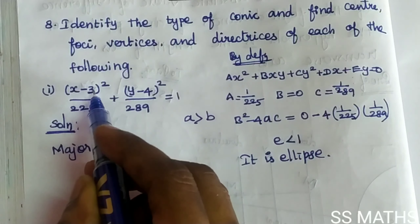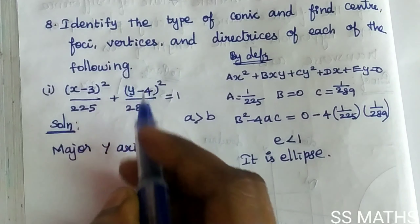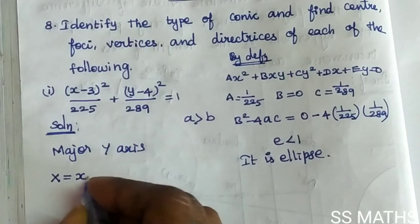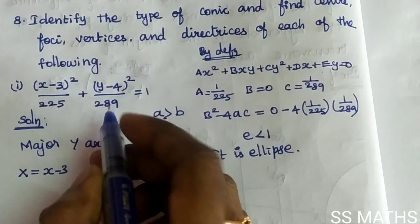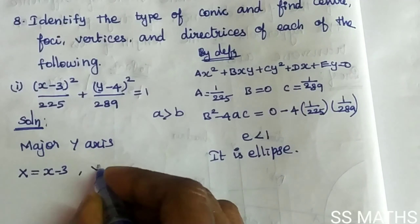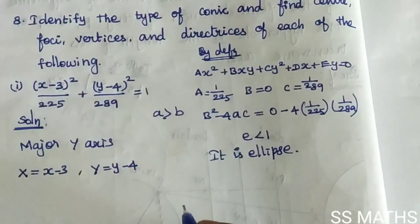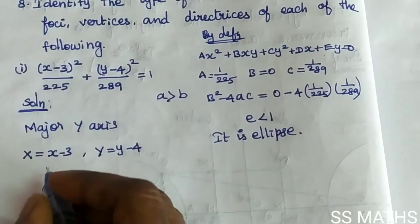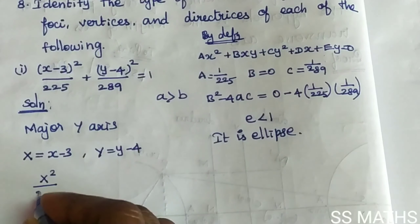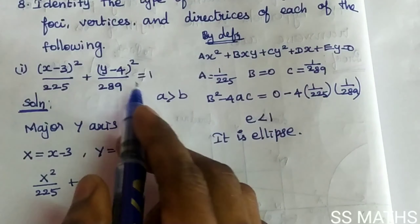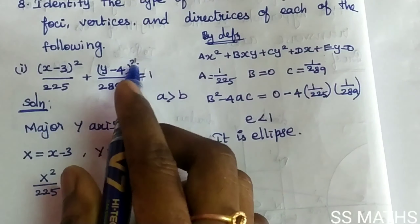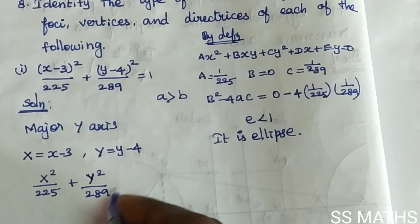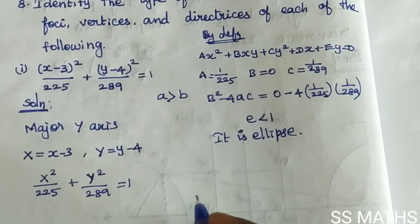Now substitute: let capital X = x minus 3, and capital Y = y minus 4. Then the equation becomes X²/225 + Y²/289 = 1, which matches the standard ellipse form with b² = 225 and a² = 289.